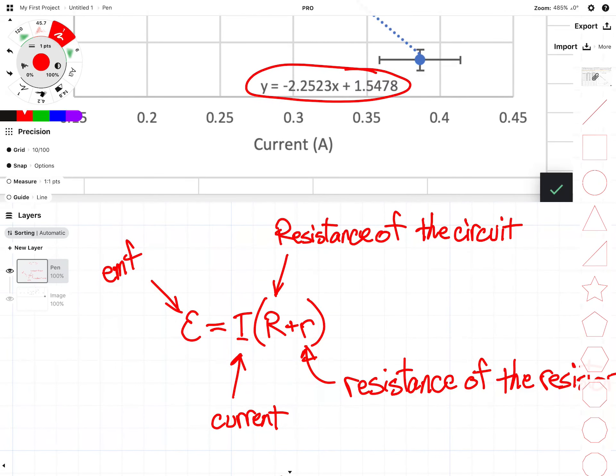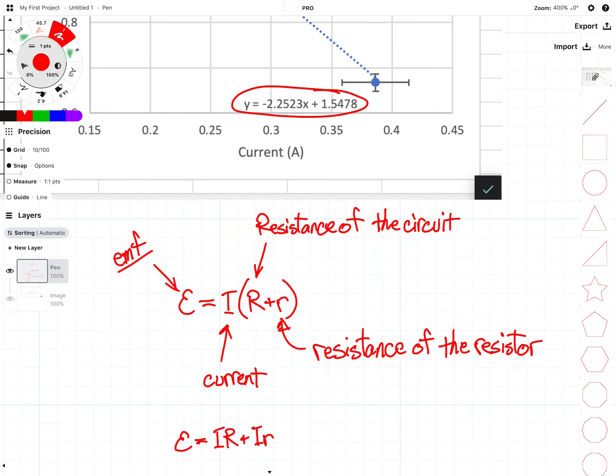First, make sure we define our variables - always important. I should also point out that this is the equation in your data booklet. We have emf, and this is the potential difference of the power supply, the presumed potential difference of the power supply. We have the resistance of the circuit.